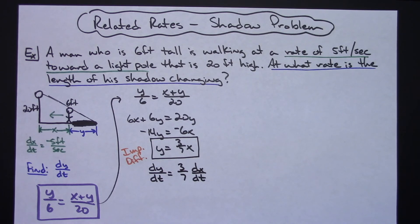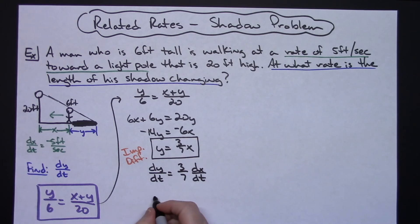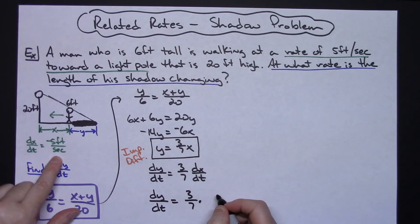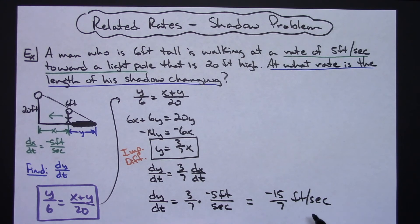At this point I can look—I know I'm trying to find dy/dt, and so I need to know if I know dx/dt. I do—that was given to us. So then my dy/dt is going to be 3/7 times that negative 5 feet per second, which then doing the math there is going to give me a negative 15/7 feet per second.